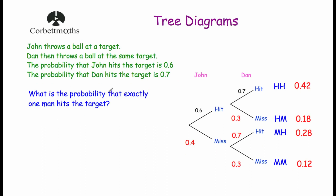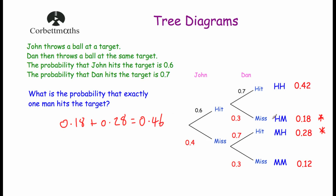The next question asks: what is the probability that exactly one man hits the target? That could be John hitting and Dan missing, or John missing and Dan hitting — so hit-miss and miss-hit are our two suitable outcomes. Using the OR rule, we add the probabilities: 0.18 + 0.28 = 0.46. So the probability of exactly one man hitting the target is 0.46.